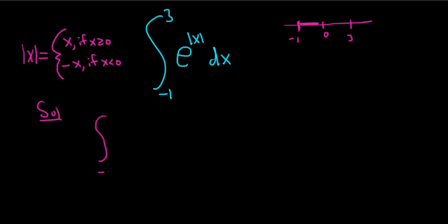So this is negative 1 to 0, e to the negative x, dx. And then from 0 to 3, we're over here, it's going to be x. So it's e to the x, dx.